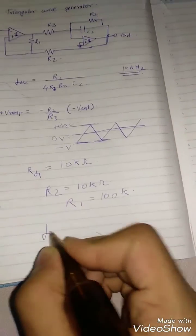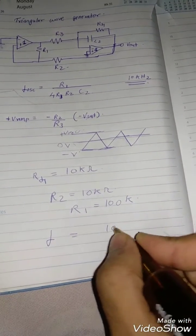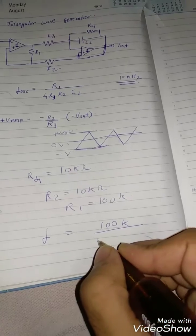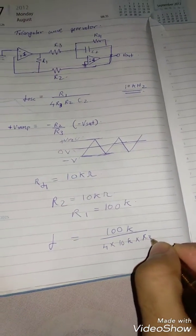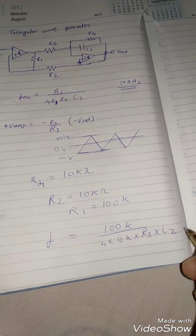Now the frequency of oscillation is equal to R1 is 100 kilo ohms. So 100K upon 4 into 10K into R3 into C2.